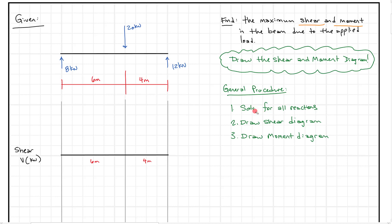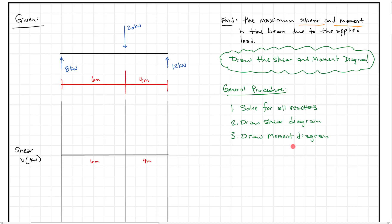The general procedure is to first solve for your reactions, which I've already done. Then we're going to jump right into drawing the shear diagram. Anytime we see a force, that's going to change the shear on this beam. If the force goes up, shear goes up. If the force goes down, shear goes down. After that, we'll draw our moment diagram and identify where the shear and moment are greatest.